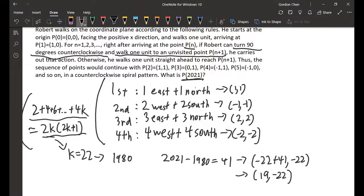We find 2k times 2k+1. We find the closest one to 2021, which is k equals 22.